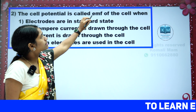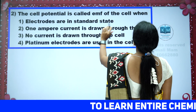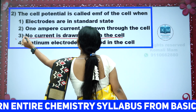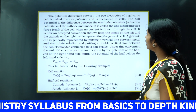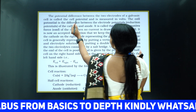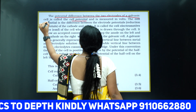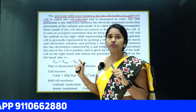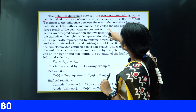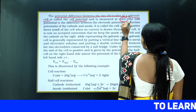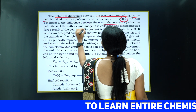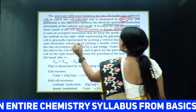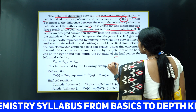Next, the cell potential is called the EMF of the cell. When do we call it the EMF? When no current is drawn through the cell, we call it the EMF of the cell. The potential difference between the two electrodes of the galvanic cell is the cell potential. The cell potential is the difference between the electrode potentials of cathode and anode, measured in volts. When no current is drawn, that cell potential we call the cell electromotive force, EMF.